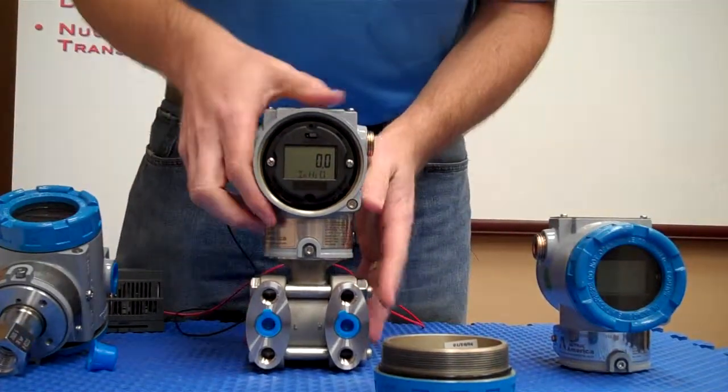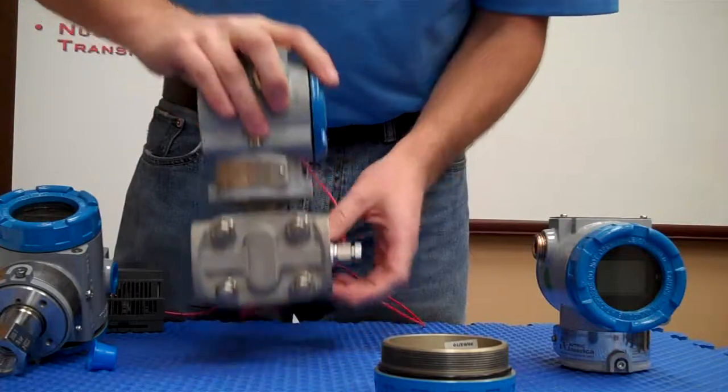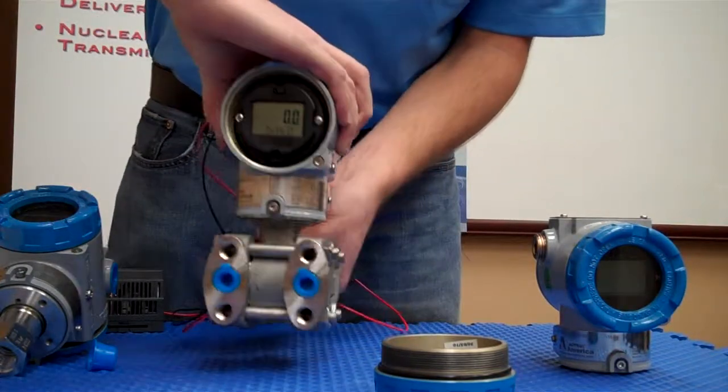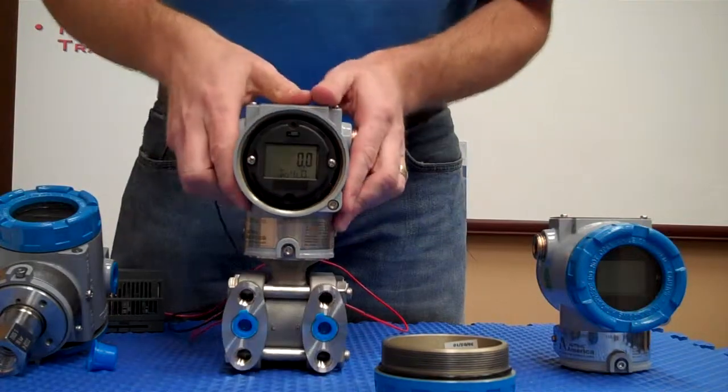On the capacitance or DP version, Autrol transmitters come with vent plugs. We find that's fairly unique in the market, so you don't have to find them separately.